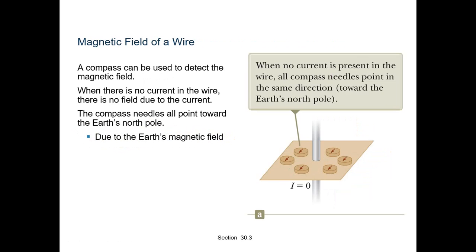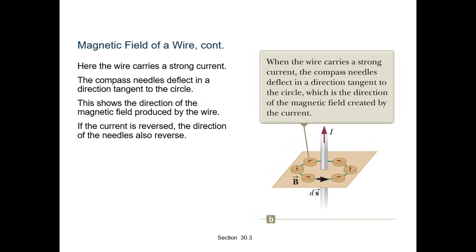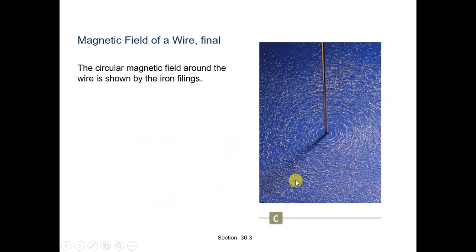A compass can be used to detect the magnetic field of a wire. When there is no current, there is no field due to the current. When current flows, the compass needles deflect in the direction of the magnetic field produced by the wire. If the current is reversed, the needle also deflects in the reverse direction. The circular magnetic field around the wire is as shown in the figure.